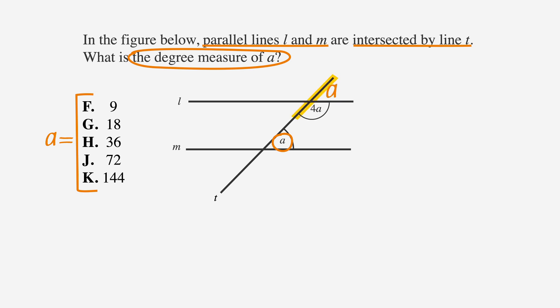Since 4A and A form a line, they must add up to 180 degrees. We can write that as the equation, 4A plus A equals 180, which we can rewrite as 5A equals 180. Divide each side by 5. We find that A equals 36, which is choice H.